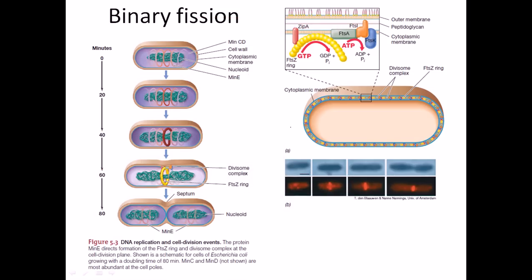Now zooming into the structure of the divisome complex — within it there are many different proteins: FtsA, FtsI, and FtsK. FtsA is the ATP hydrolytic machinery. ZipA is another important protein embedded in the cytoplasmic membrane. Most of the proteins here — ZipA, FtsA, and FtsK — are embedded in the cytoplasm, while FtsI is slightly embedded in the peptidoglycan layer to hold the structure stronger.